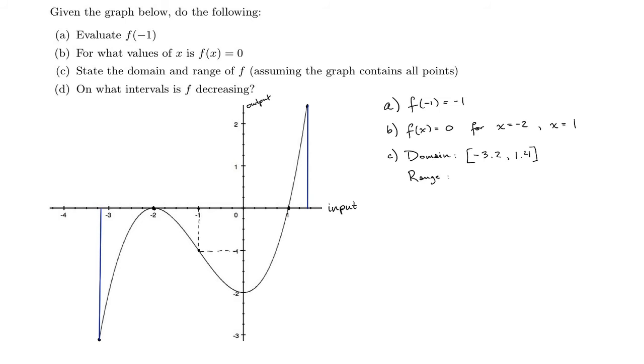For our range, we do the exact same thing, but we look at the highest and lowest points, which happen to be the same for this example. So I take those points, and I draw the connection over to the output axis. Highest of those points. And I just want to estimate those values. It looks like this lowest value is about a negative 3.2 again. And it looks like this highest value is right around 2.4.